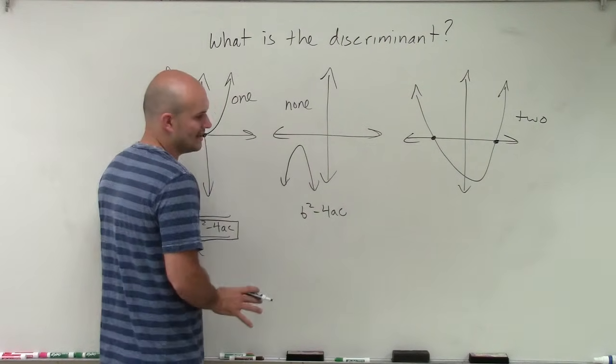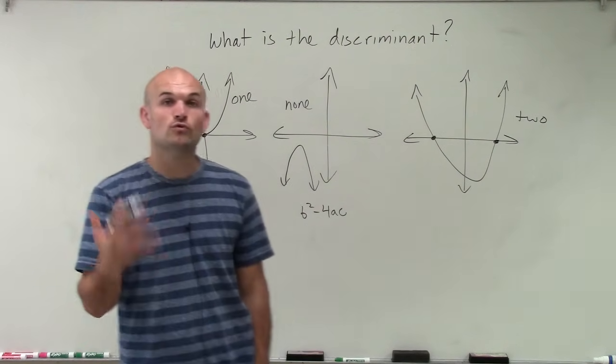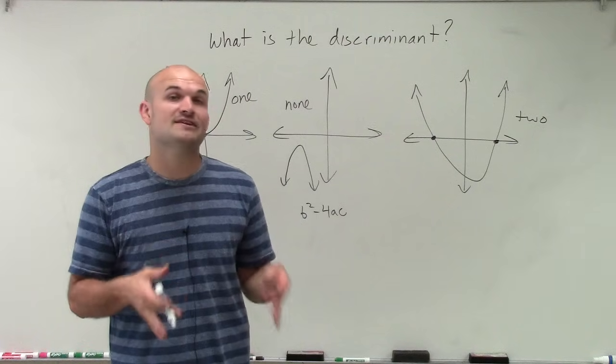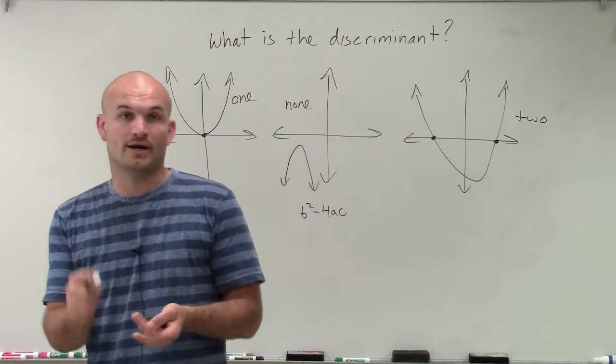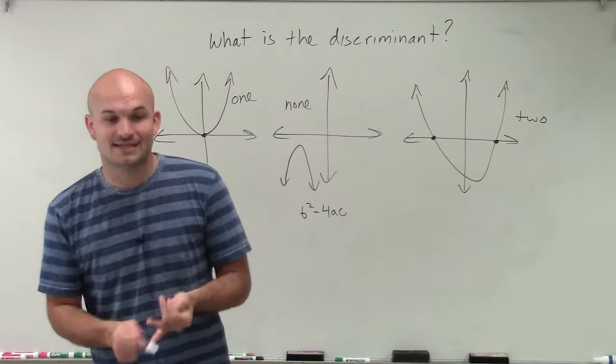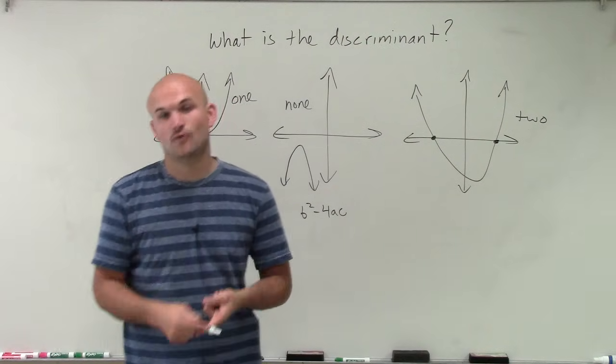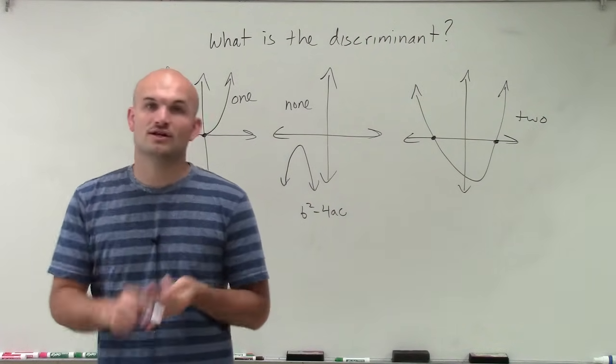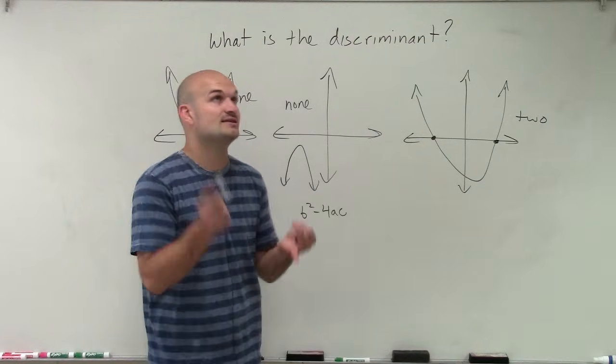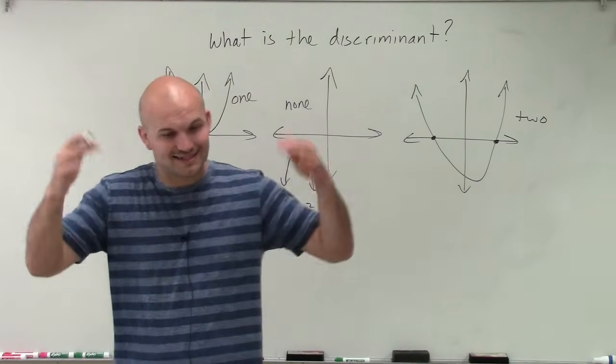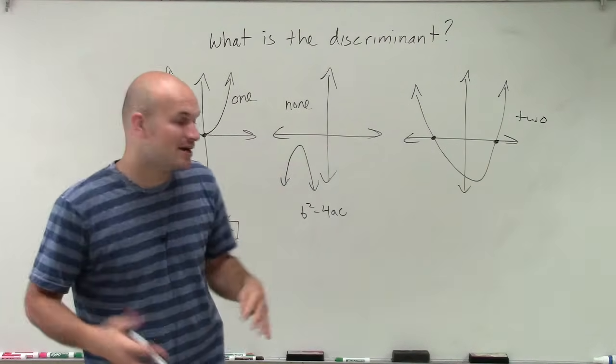So in our discriminant, if we can take the square root of the number, that means we have a square number. Square numbers such as 1, 4, 9, 16, 25, 36, 49, 64, 81, 100, 121, 144, 169, and so on. We can keep on going up.